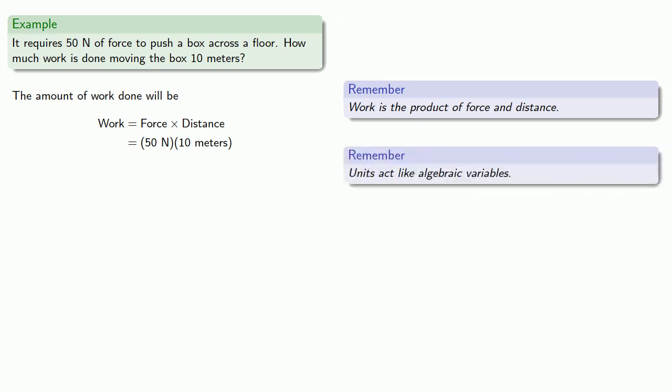So when we multiply these two together, we can multiply the coefficients 50 and 10 to get 500, and the units multiply to get Newton meters. And note that since we're measuring force in Newtons and distance in meters, this Newton meter is the same as a Joule.